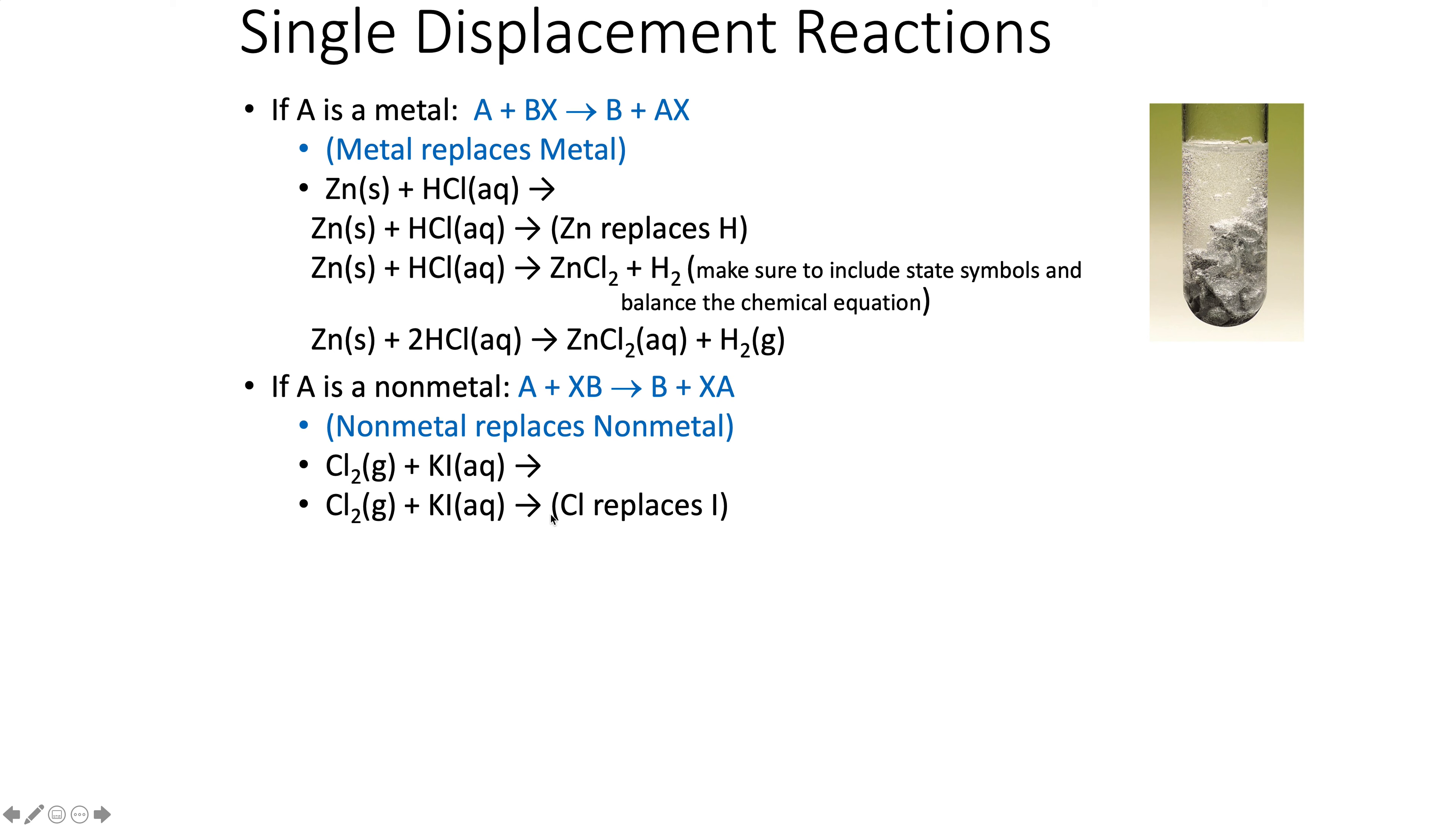Why don't you see if you can come up with the products of this one on your own? The chlorine is going to replace the iodine. Remember iodine is I2 because it's a halogen. The chlorine will be with the potassium. Always write the metal first. Potassium is plus one, chlorine is negative one, and then fix it with balancing.